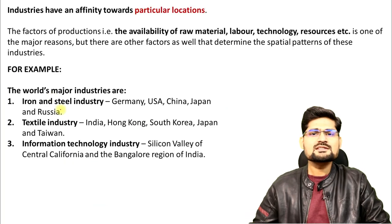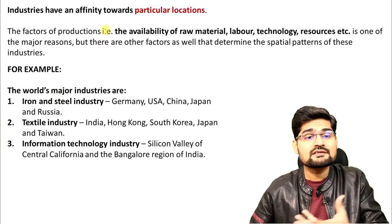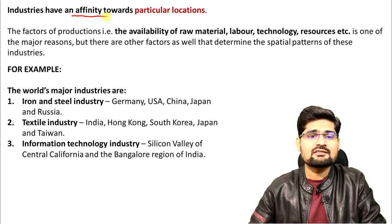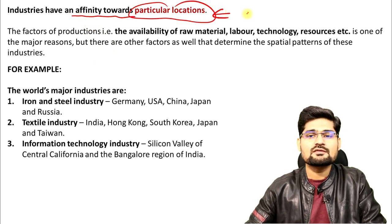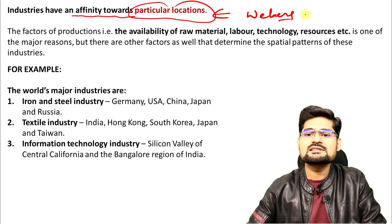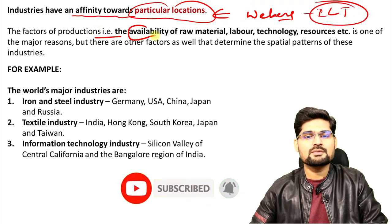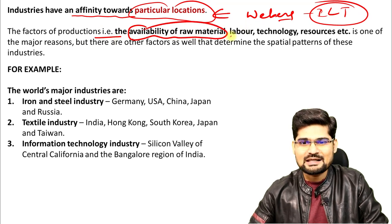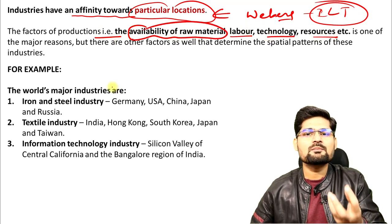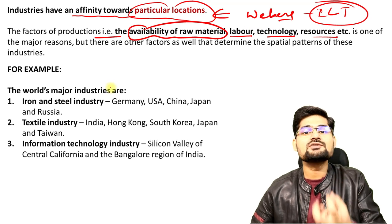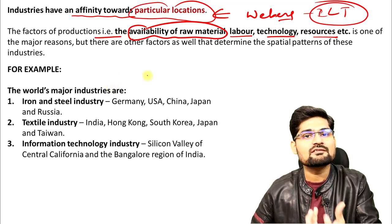What is important here is the locational factor — the geographical factor. Industries have an affinity towards a particular location, and that's where we talk about Weber's industrial location theory. Factors of production — availability of raw material, labor supply, technology, and resources — are the four important pivots which lead to the creation of an industrial hub in a particular given space and time.